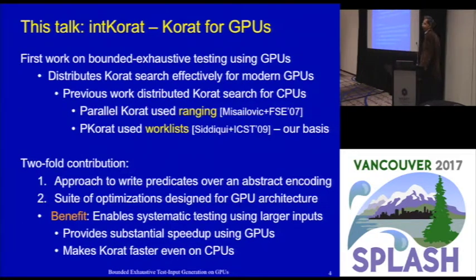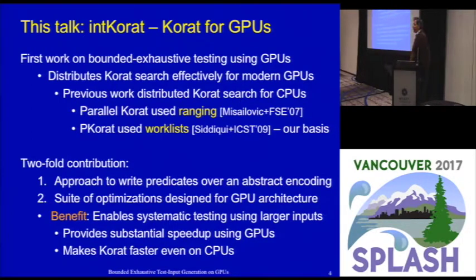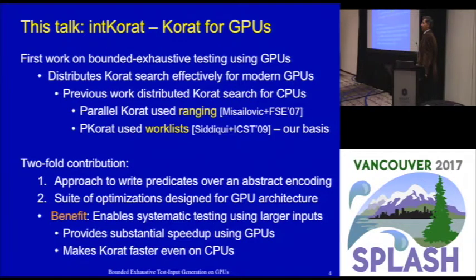In this talk, we take Korath to the GPUs. This is the first work on bounded exhaustive testing in the context of using GPUs. We are distributing the Korath search for modern GPUs. There are two lines of previous work that distributed the Korath search in the context of clusters of commodity CPU-based machines. More recent work on pKorath used a work list based technique, which is the foundation of how we take Korath to the GPUs. We make a two-fold contribution.